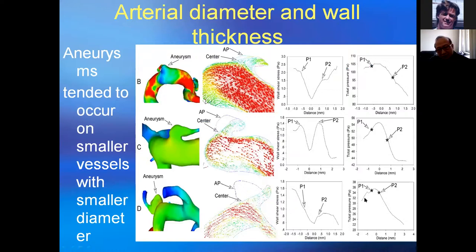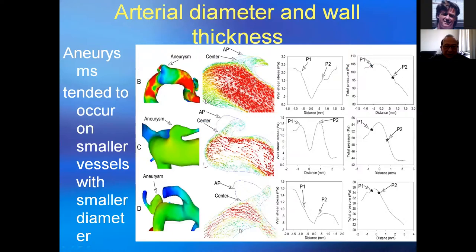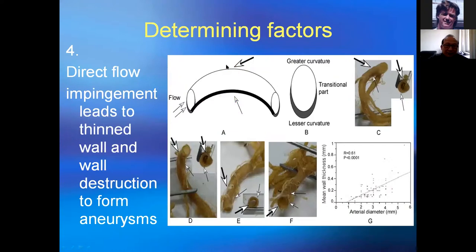Another case with a peak arm aneurysm: wall shear stress and total pressure at the initiation site are very small. The aneurysm was initiated there rather than at the larger vessel, because at the peak arm the diameter is small and wall thickness is also small. When the wall is very thick, it needs much greater hemodynamic stresses acting for a long time. The exact determining factor is that direct flow impediment causes wall destruction to form an aneurysm.